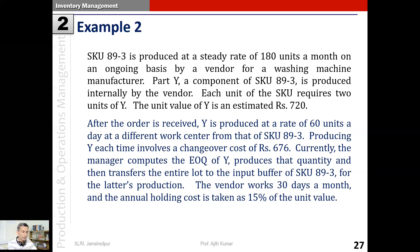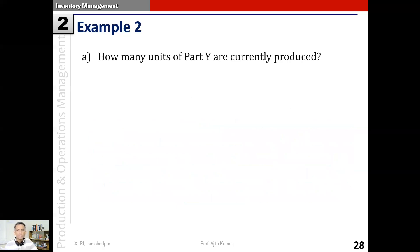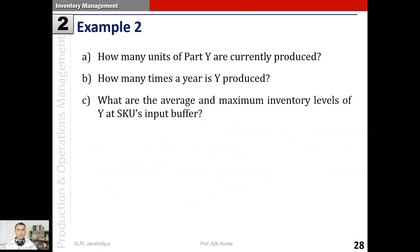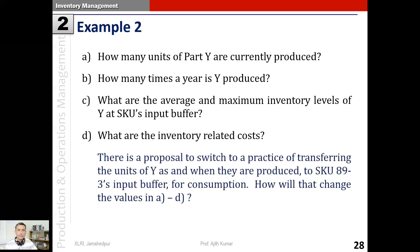The entire ordered quantity once produced is transferred to the input buffer of SKU 89-3 and added at one point in time. The vendor works 30 days a month and the annual holding cost is 15% of unit value. We are asked: how many units of Y are currently produced, how many times a year is Y produced, what are the average and maximum inventory levels, and what are the inventory-related costs? Additionally, there is a proposal to switch to transferring units of Y as and when they are produced, rather than waiting for the entire batch.